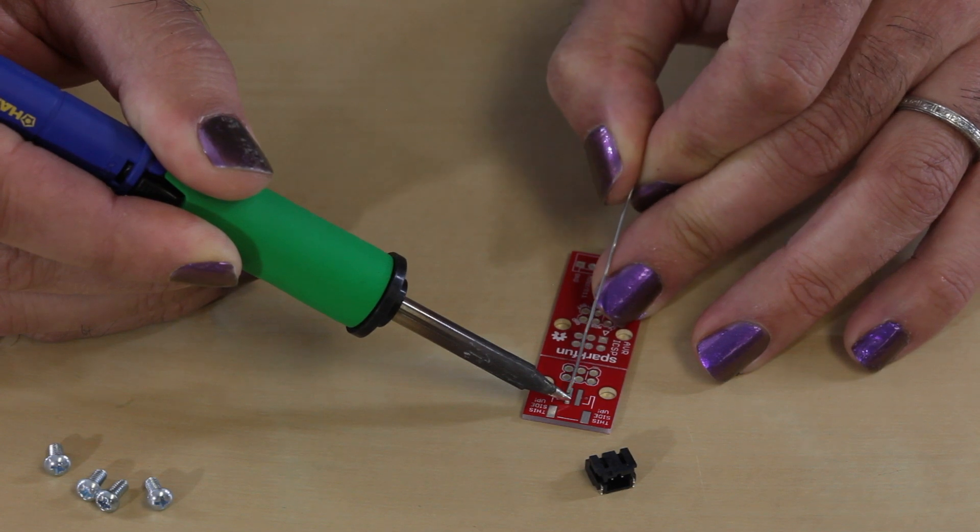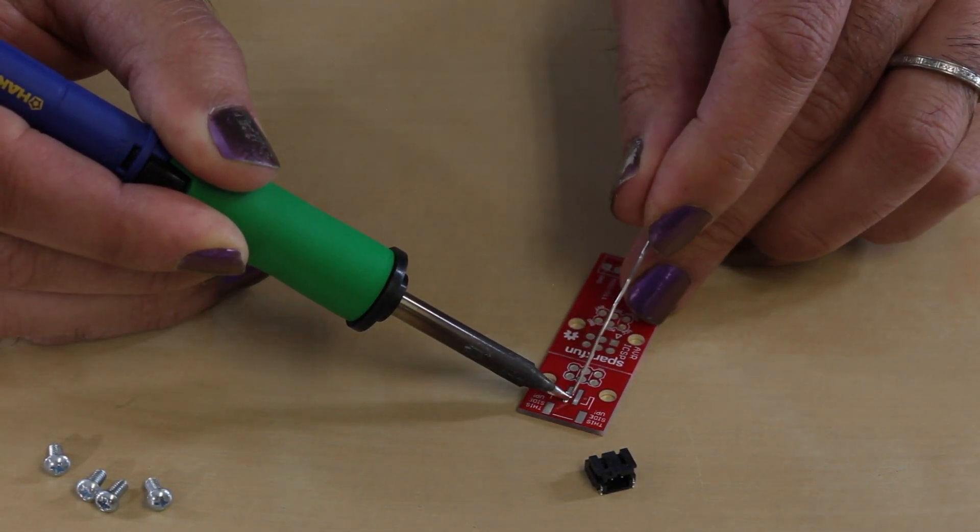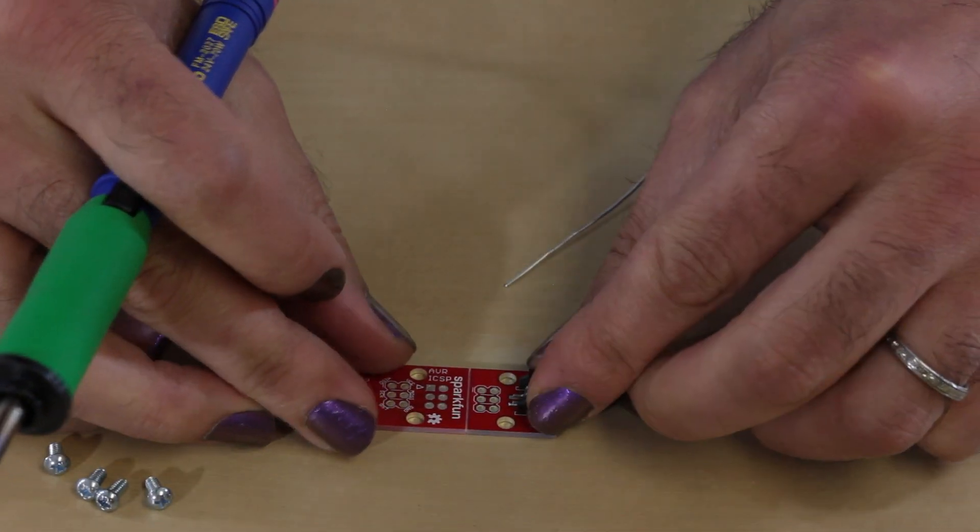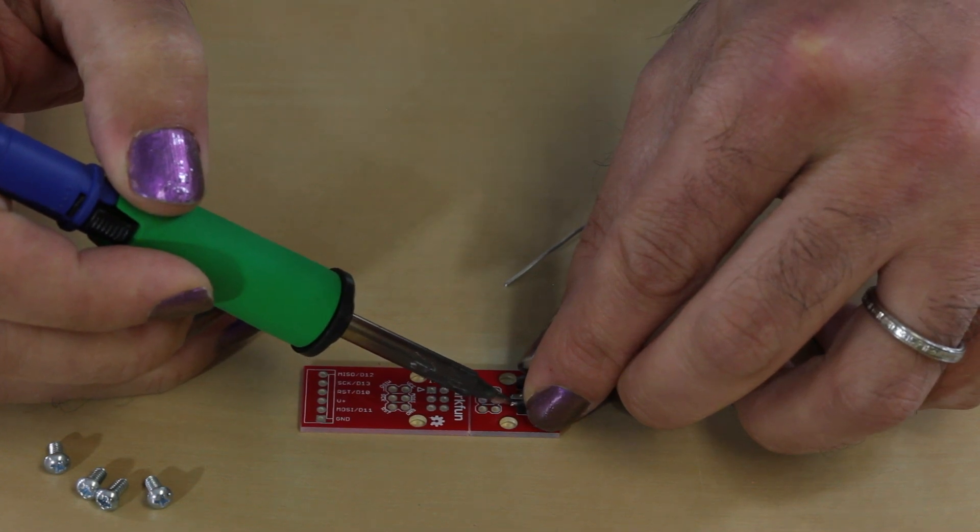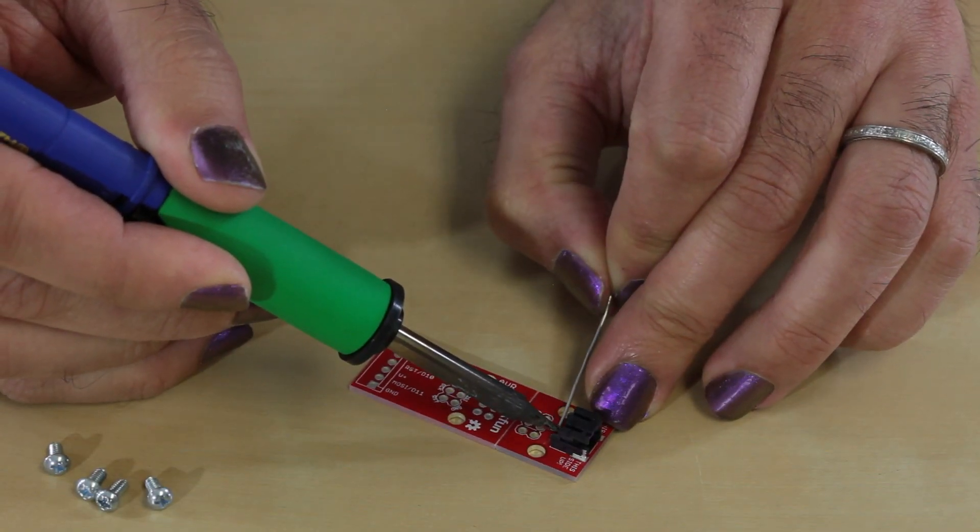Just go ahead and touch your iron to one of the pads until you get a little bit of solder flowing onto that pad. Put the connector in place, melt the solder again.